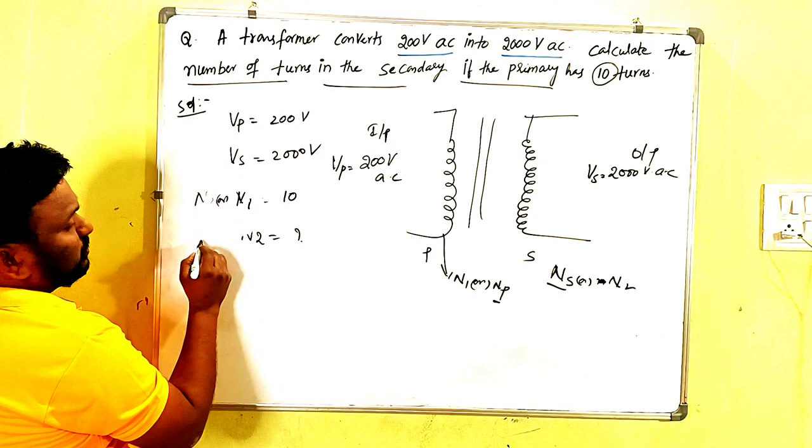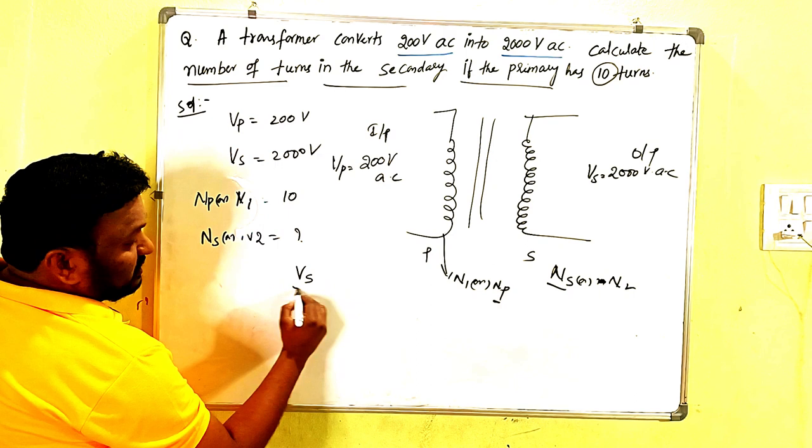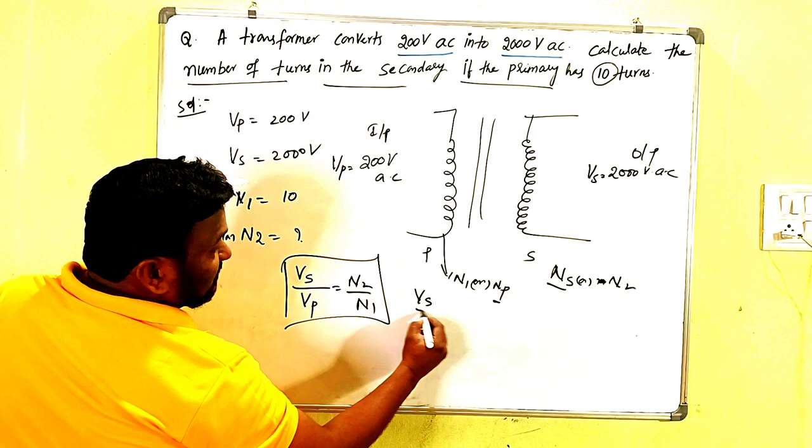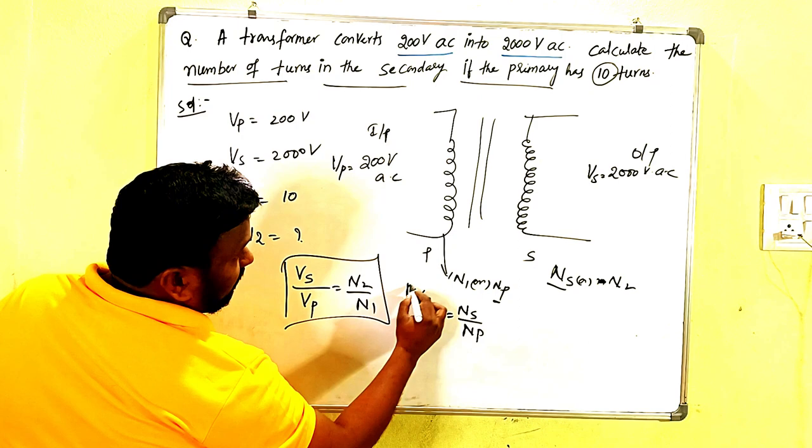N1 or Np, whatever it is, your choice. And then the formula: the transformation ratio. Vs by Vp is equals to N2 by N1. Or you can write like this also: Vs by Vp is equals to Ns by Np. That is the formula.